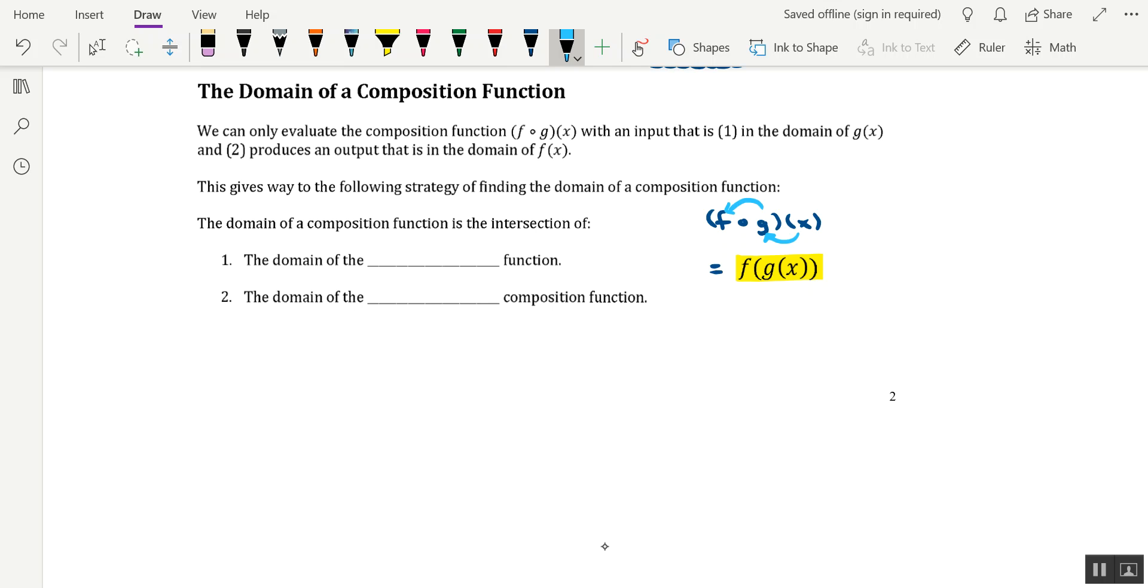So when it comes to evaluating a composition function, two things need to happen. Number one, the value of x that you're plugging in initially has to be in the domain of g of x, and I think that's pretty clear. But what might not be as clear is what happens with the output that you get. The output that you get by plugging your specific value of x into g of x needs to be an output that is in the domain of the function f of x.